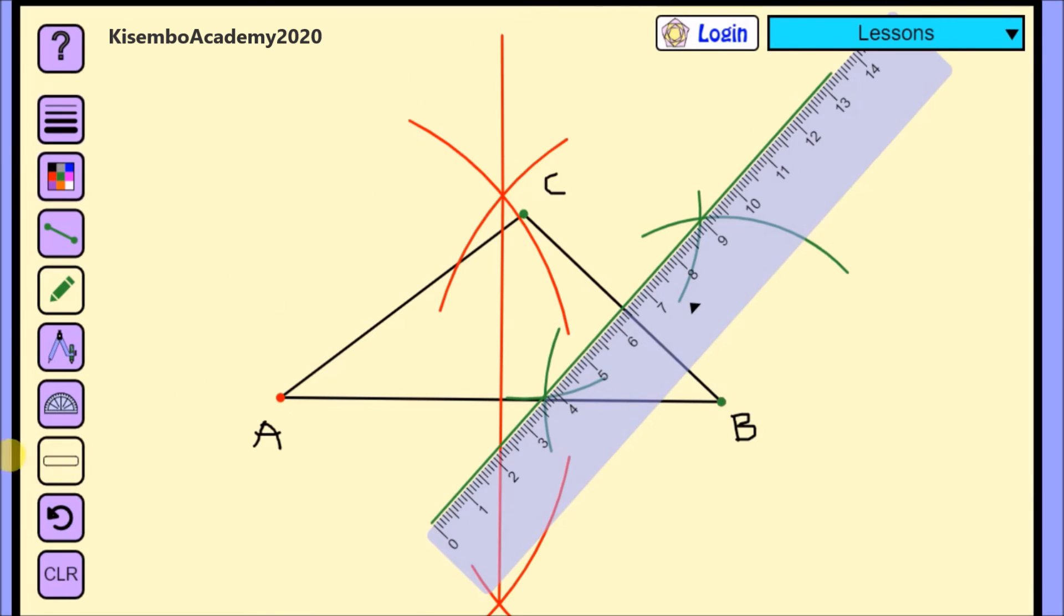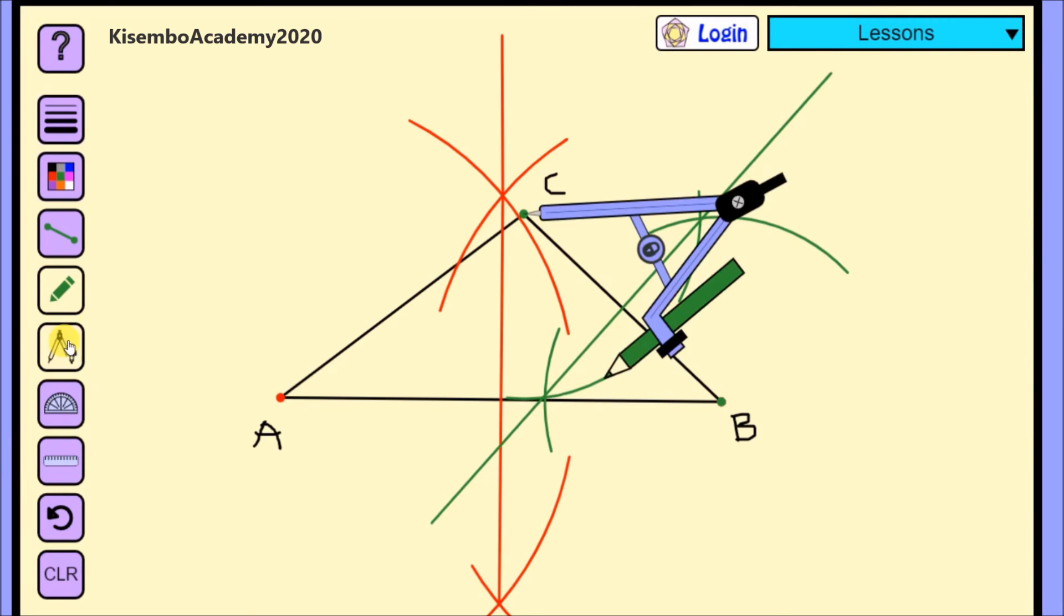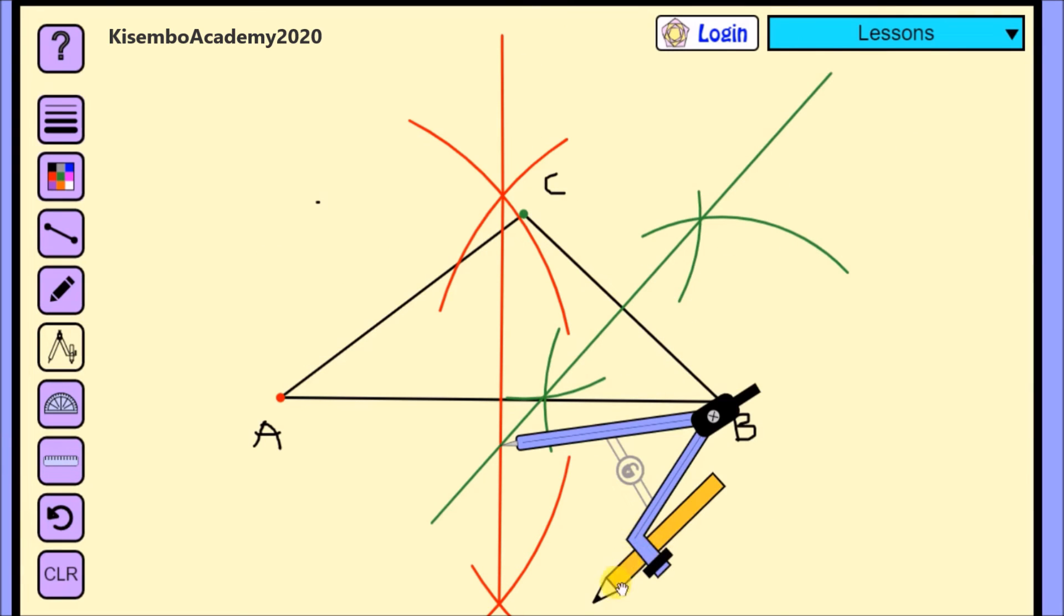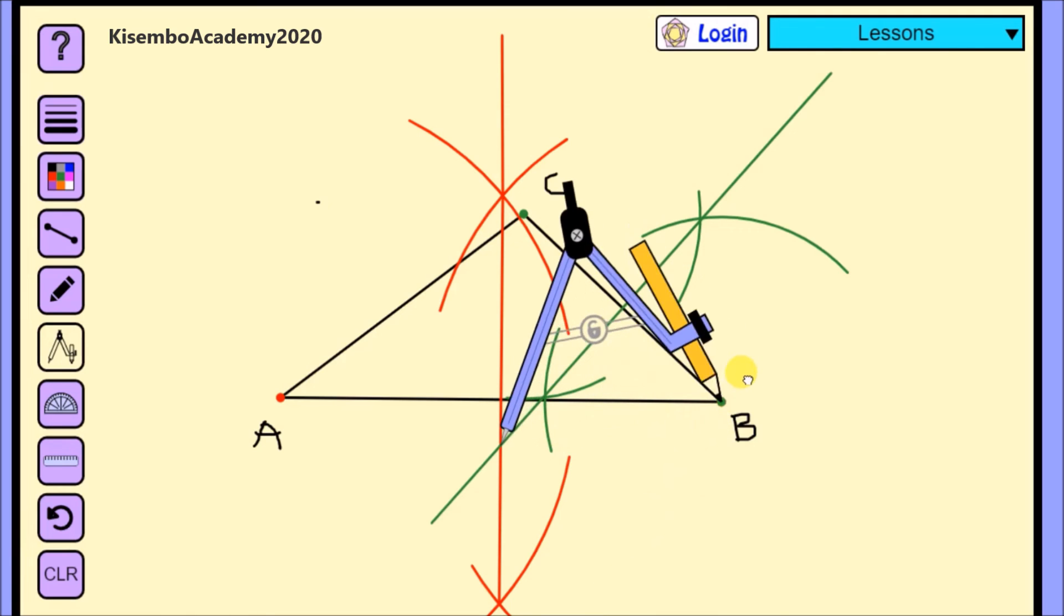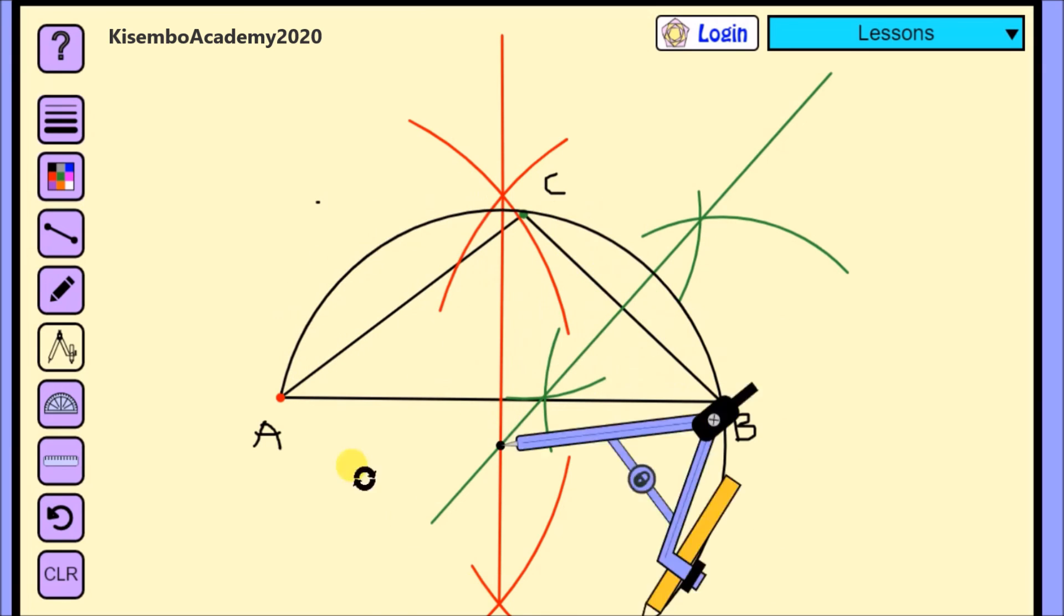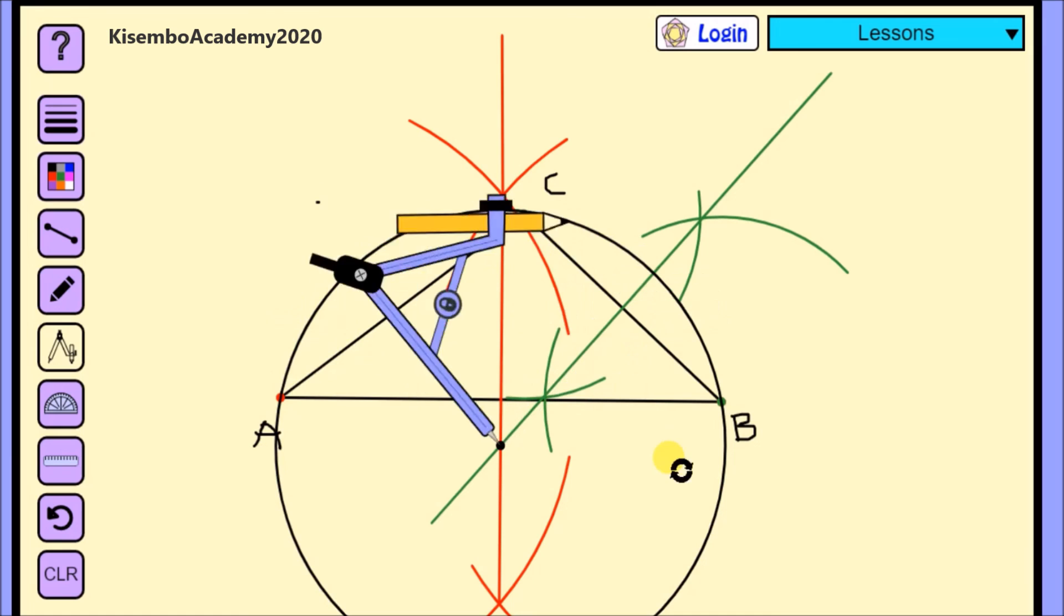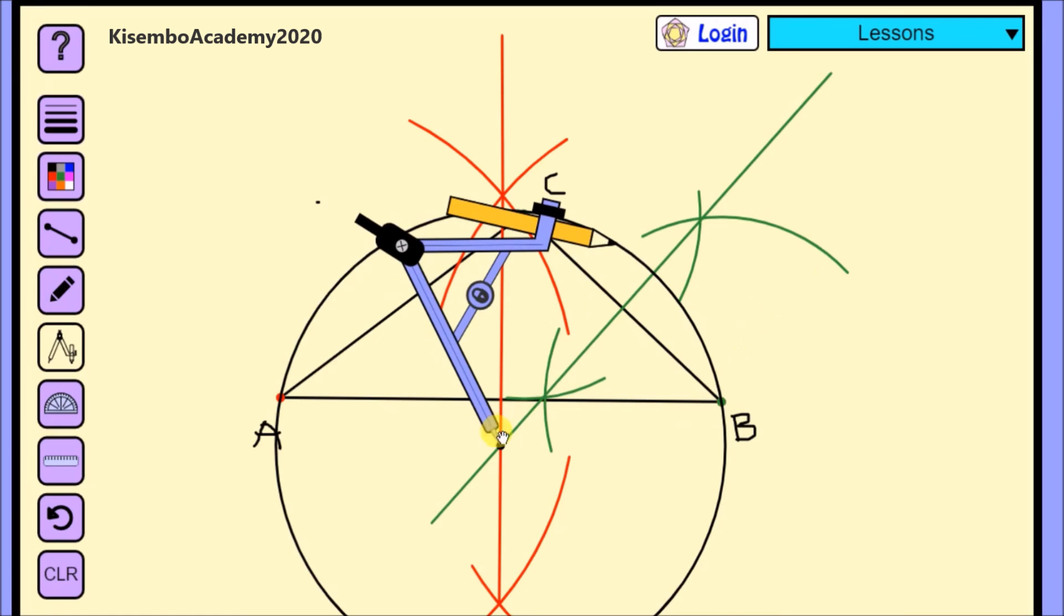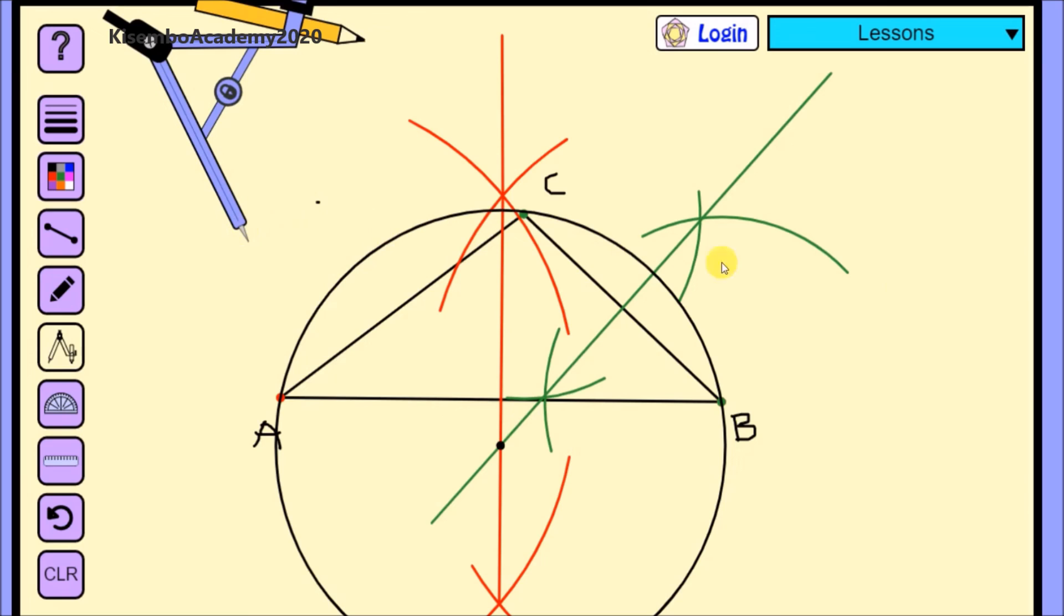Now where these two lines meet becomes the center of the circle we are going to draw. So I'll get my compass point. Point it at the center of the circle. And as I'm drawing this circle, I have to make sure. Okay, not exactly making sure, but it is obvious. It will work out automatically that the circle will touch all the three vertices of the triangle.